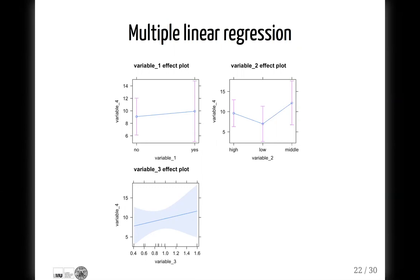We already saw this plot — the smarter the farmer is, the more he earns. But this relationship is not significant because the confidence interval throughout the whole range of IQ values overlaps.